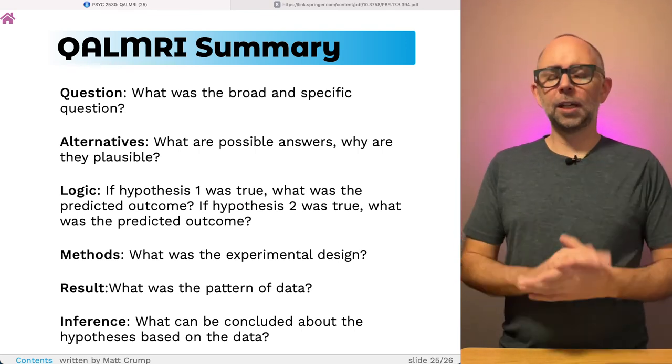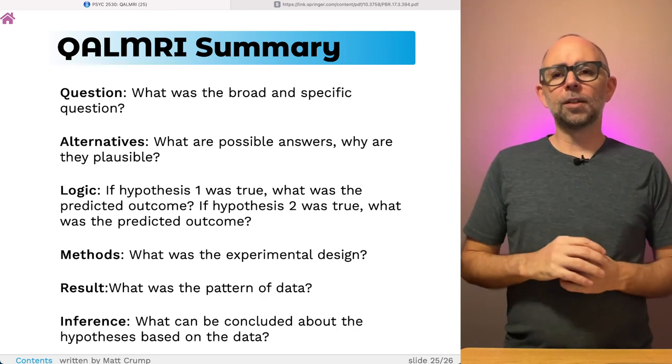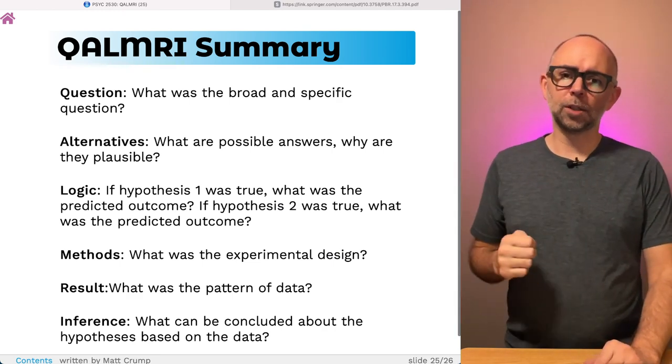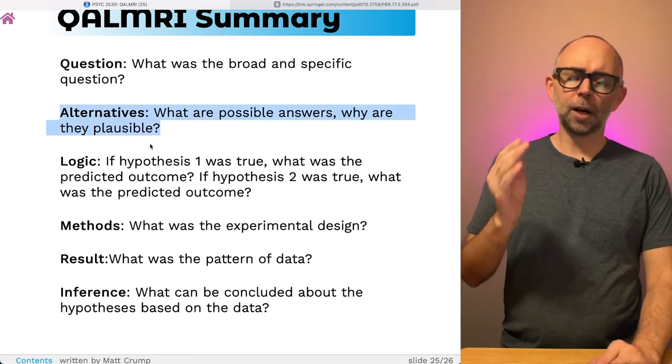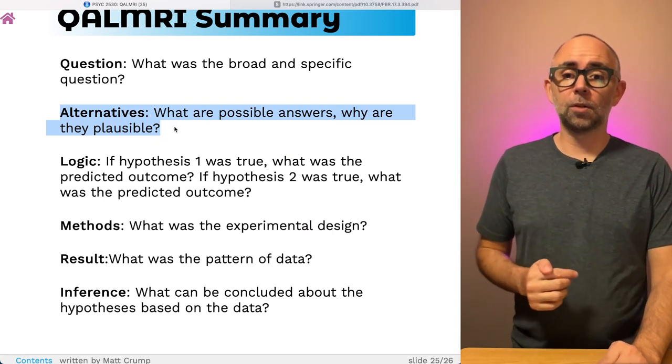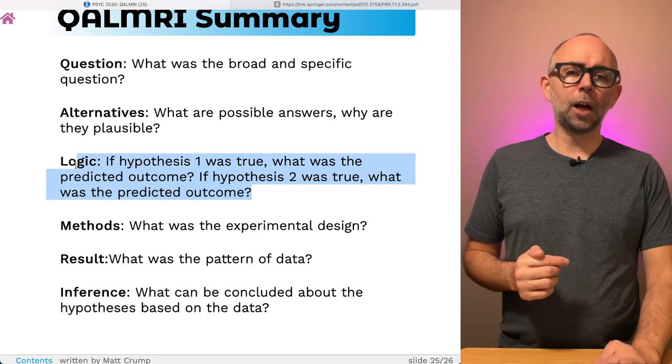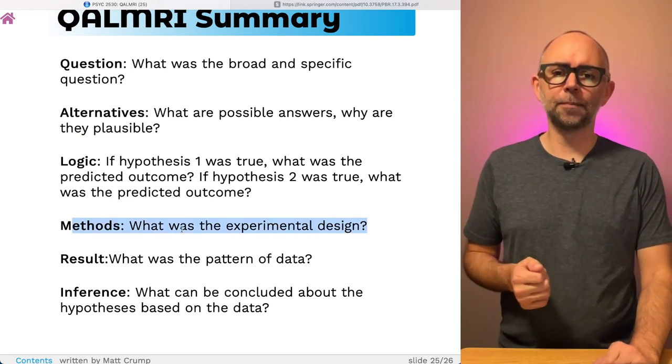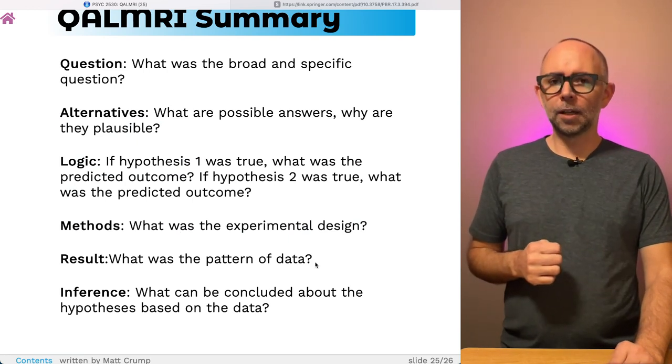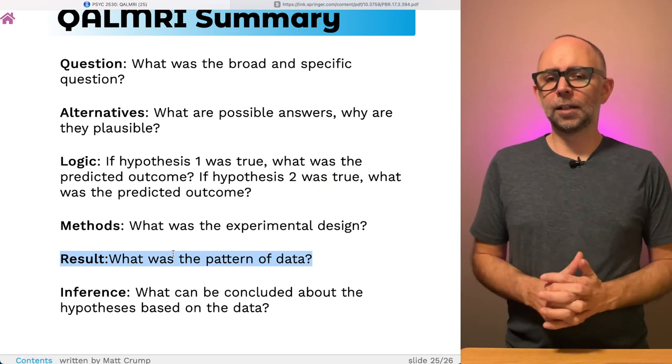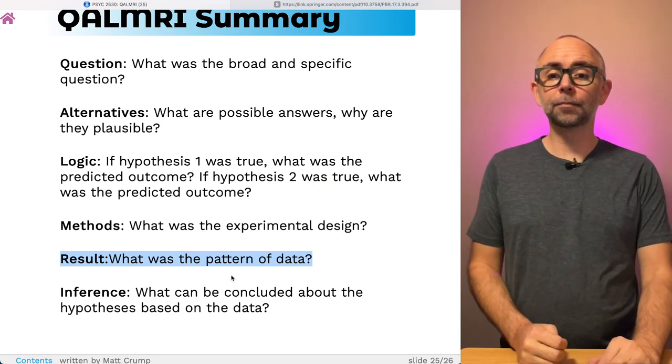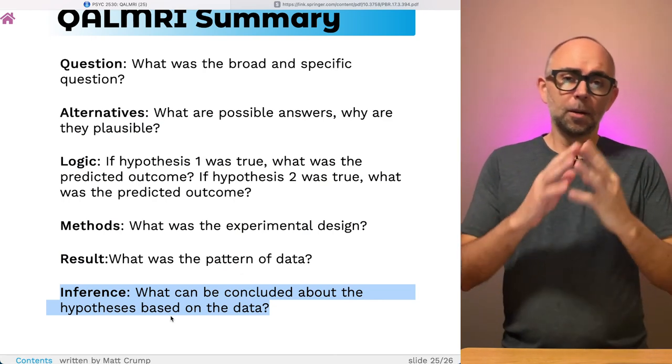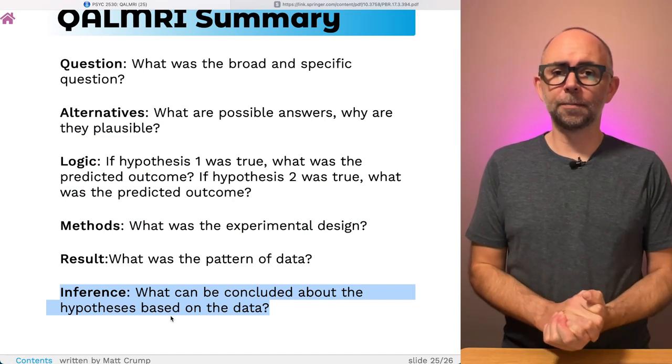So, here's a summary. When you go and obtain a research article, you could use the QALMRI method to orient yourself towards the major components of that article. You're looking for the questions. What are the broad and specific questions in the paper? You're looking for alternative hypotheses or explanations about those questions. You're looking for the logic of how those explanations work, along with how that logic can be tested in an experimental design. Once you understand the logic of the experimental design, you should be looking for what results did that design produce? What was the pattern of data that was obtained? What kinds of inferences about the hypotheses can be made based on the pattern of results that were observed in the experiment?